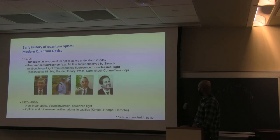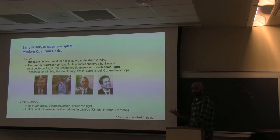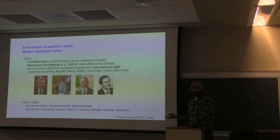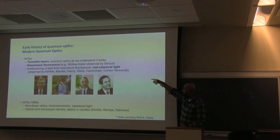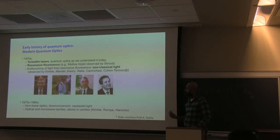The non-classical light states, which had previously not been thought about or observed, were finally observed by Kimble and Mandel, and the theory was carried out by people like Walls and Carmichael. This led to another flourishing in the 1970s and 1980s, including non-linear optics and parametric down-conversion, which is one of the main ways we first started to verify many predictions of entanglement — Einstein-Podolsky-Rosen states were observed in these initial experiments.